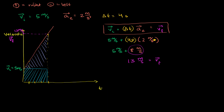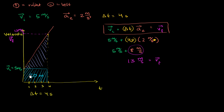This blue area is how far we would have traveled if we were not accelerating — if we just went 5 meters per second for 4 seconds. Going from time 0 to time 4, our change in time is 4 seconds. So if you go 5 meters per second for 4 seconds, you're going to go 20 meters. This right here is 20 meters — that is the area of this rectangle, 5 times 4.